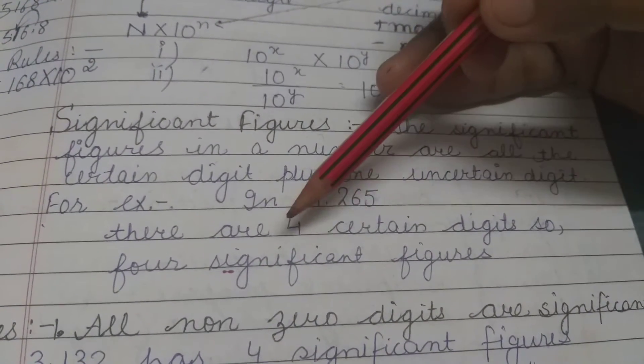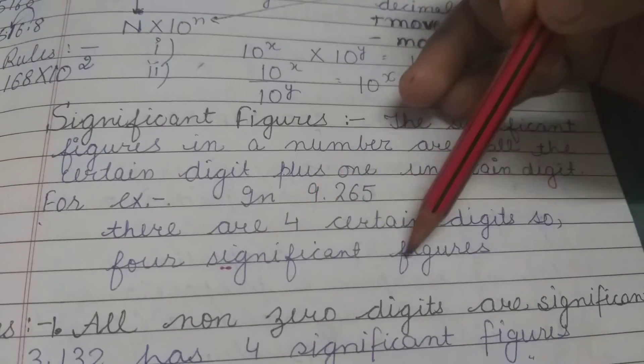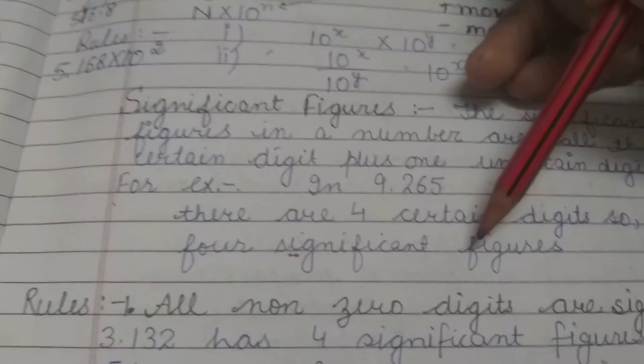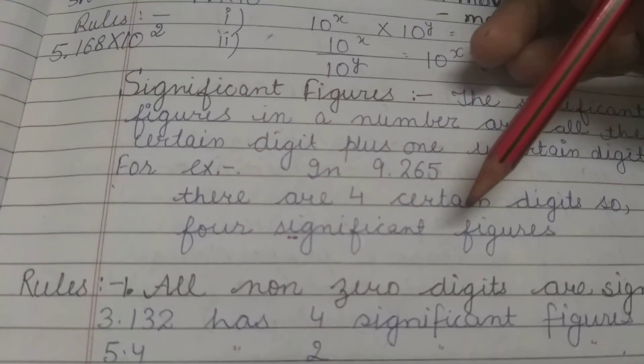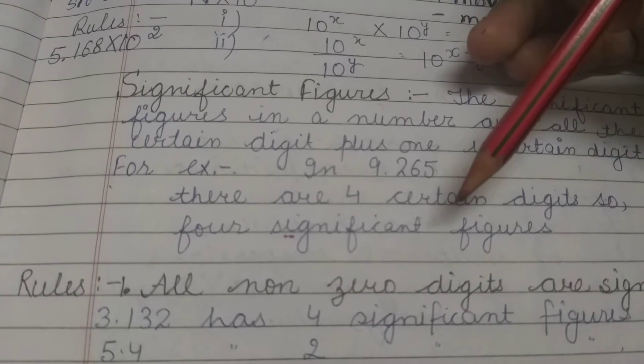Here we have four certain digits, that means we have four significant figures. There are certain rules to calculate the number of significant figures in a number.